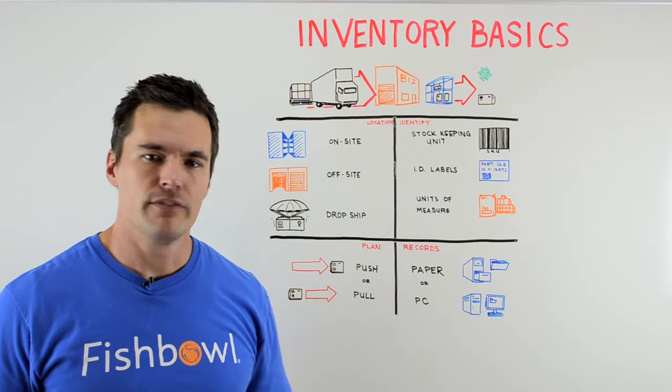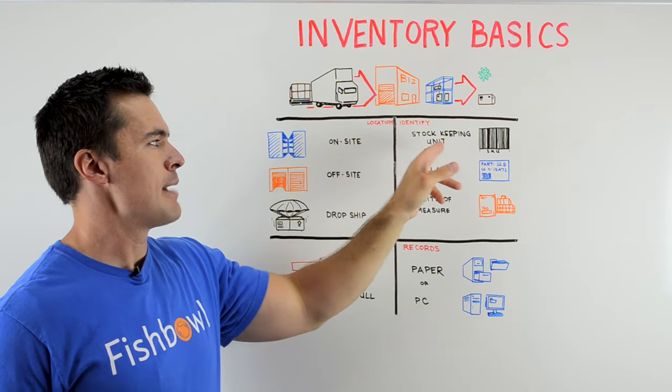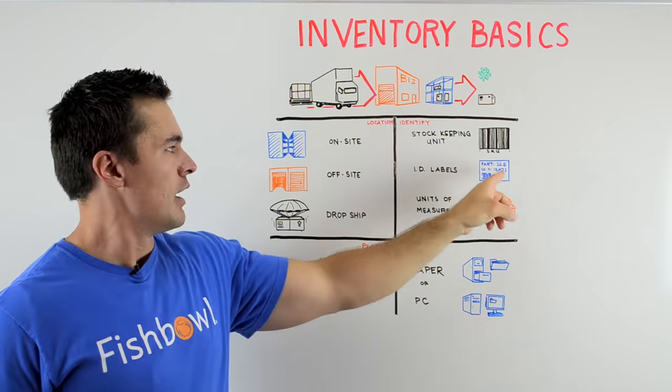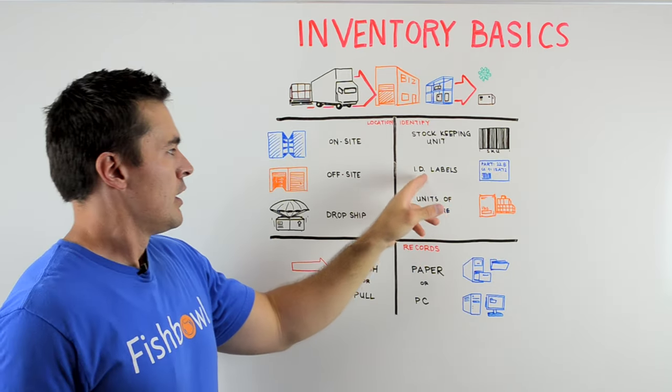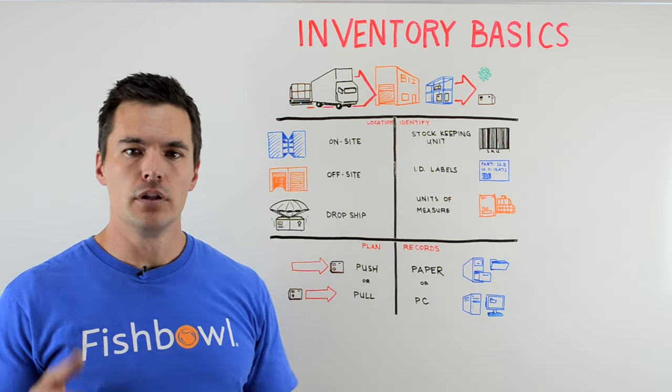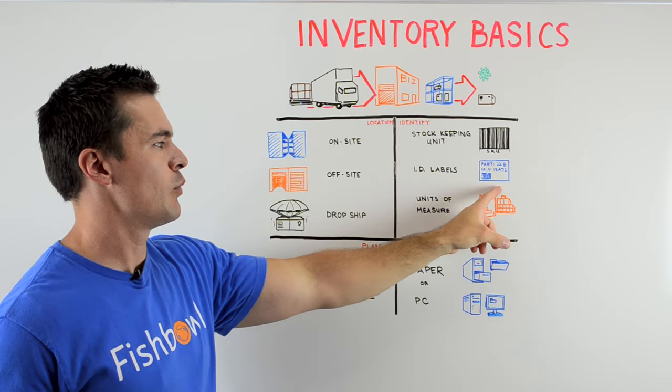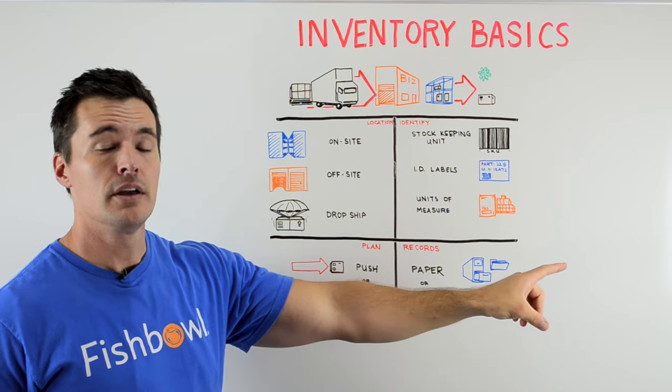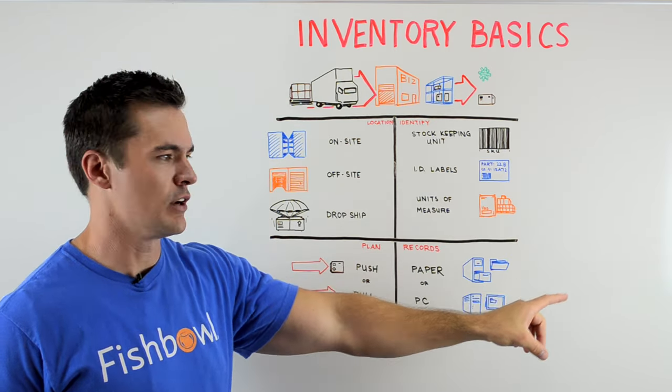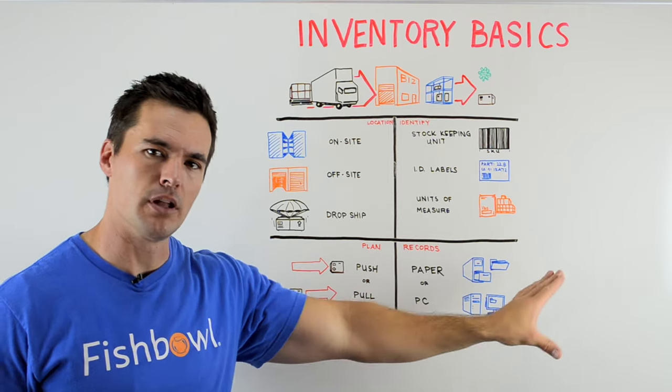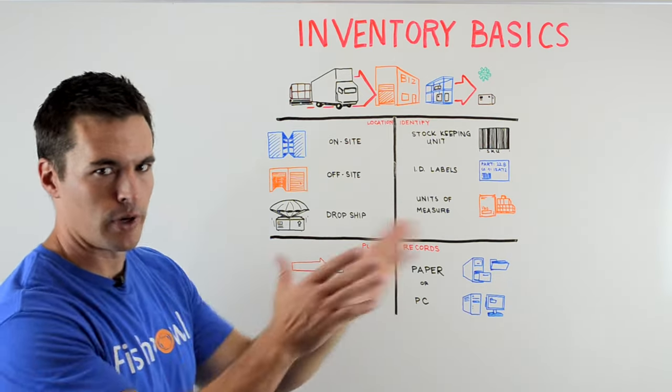Identify. This is really important with our inventory. We need to make sure we're using stock keeping units, known as SKUs. Make sure we ID label everywhere that we can so we know exactly what we have and where we have it. It's going to take a little more time in the beginning, but then you're not looking and searching. You know where stuff belongs, whether you're taking it down or putting it back up.